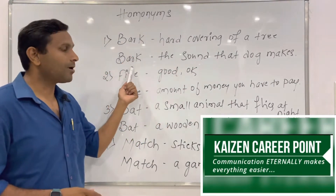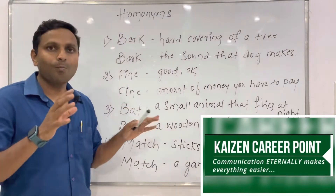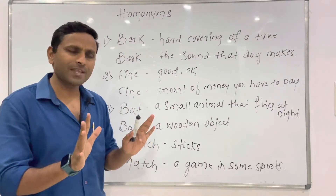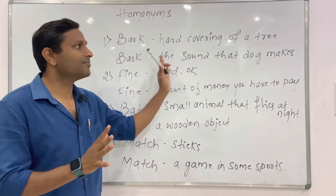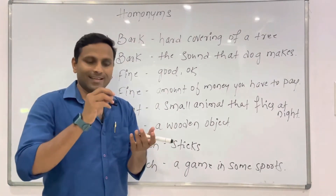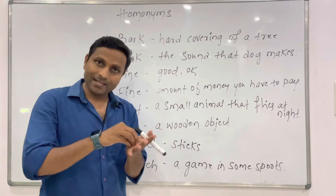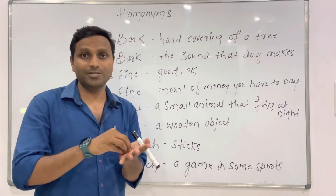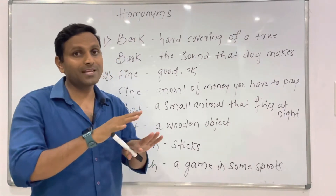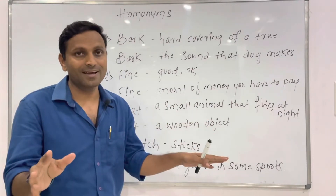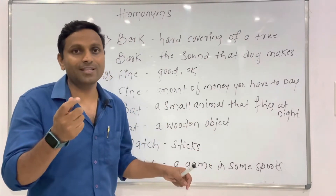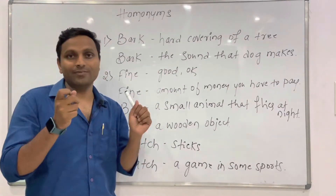As you can see there are 'bark' and 'bark' — both are the same and the spelling is also the same but they have different meanings. Spelling is the same, pronunciation is the same, but the meaning is different. These are called homonyms.